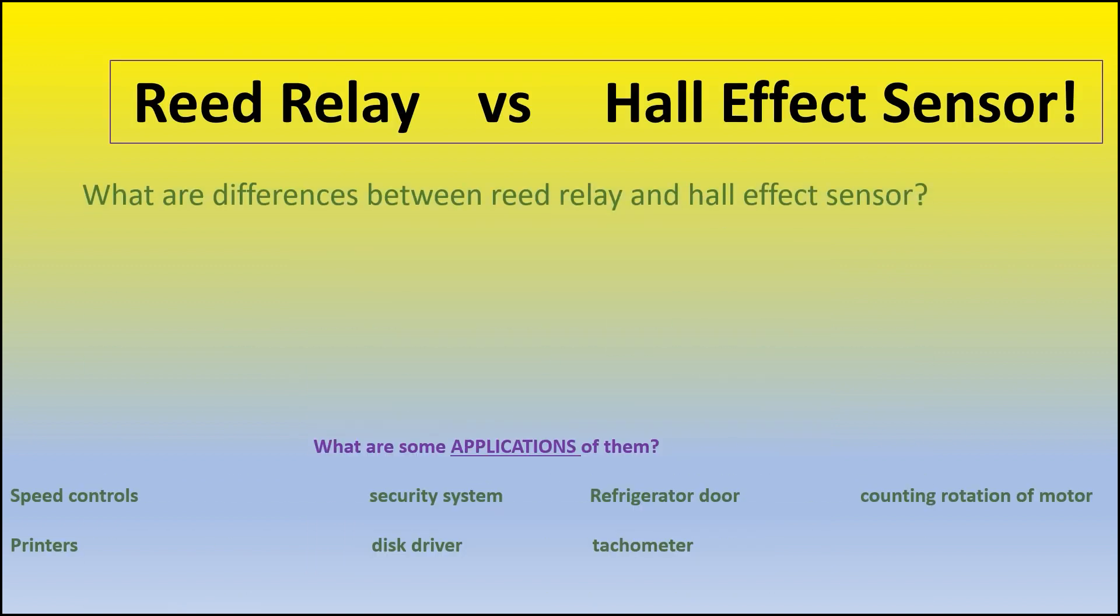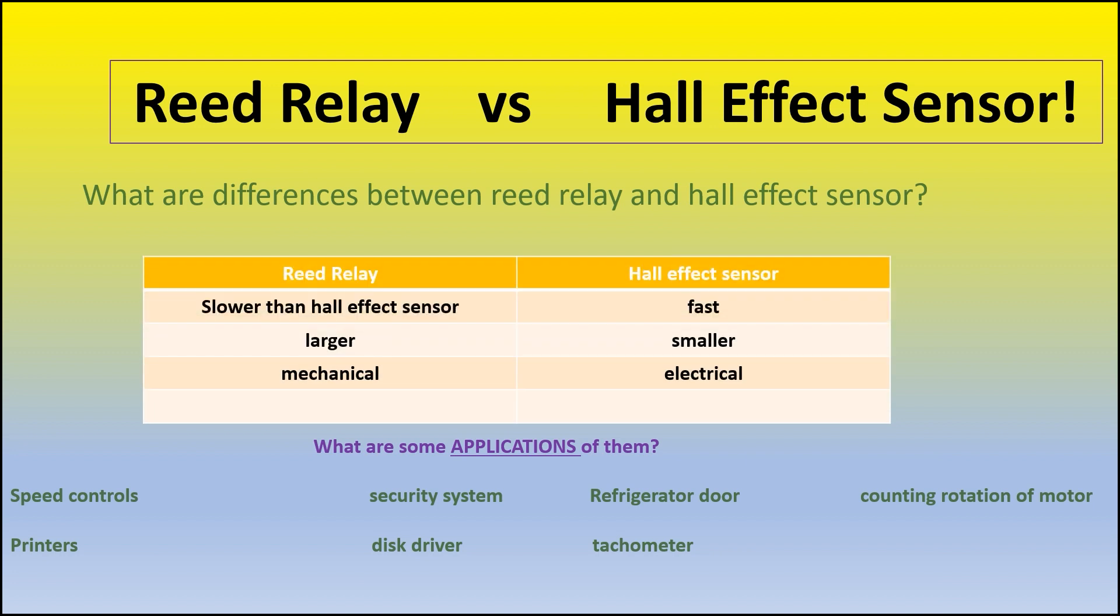The difference between these two is that the Hall Effect sensor is much faster, smaller and electrical. So it is better to use in our project because it is more reliable and the application of it is that we can use for the security system, for the speed control, for printers and for disc drivers, for tachometer. There are tons of applications with this sensor.